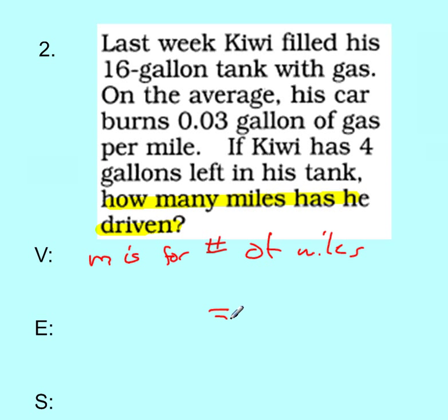Well, let's read the rest of the problem. Kiwi filled his 16 gallon tank with gas. On average, his car burns 0.03 gallons of gas per mile. He has 4 gallons left in his tank. So everything equals 16. So that's his whole tank. Now, what equals 16? Well, he burns 0.03 gallons of gas per mile, so we've got to take that times M. But he had 4 gallons left in his tank, so we're going to add that to it.